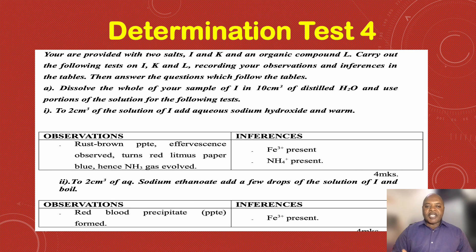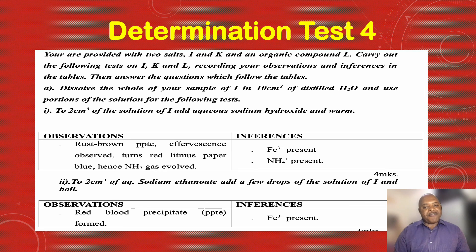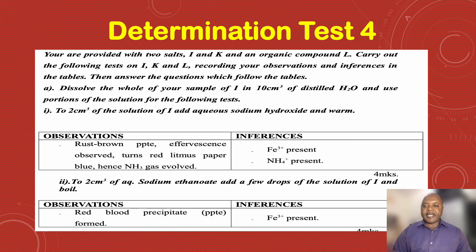Test 2: to 2 cm³ of aqueous sodium ethanoate, add a few drops of the solution of I and boil. On boiling the solution, I observed that a blood red precipitate was formed. In line with the information in the booklet, Fe³⁺ ion is present.